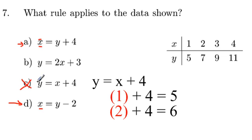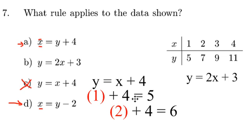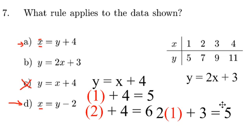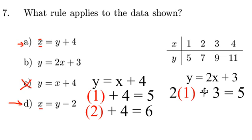Now I'm going to go to b, and b is y equals two x plus three. I'm going to do the same thing. I'm going to start with one and substitute that one in for x, so it's going to read two times one, which is two, plus three equals five. That works out.